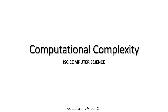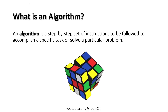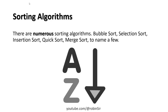Hello and welcome. In today's class I'll be discussing the topic computational complexity, which is part of the Class 12 computer science syllabus. To understand computational complexity, first we need to understand what an algorithm is. An algorithm is a step-by-step set of instructions to accomplish a specific task or solve a particular problem — like a recipe. For instance, to solve a Rubik's cube there might be a set of instructions we follow until the goal is achieved.